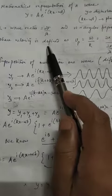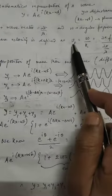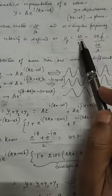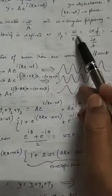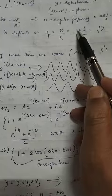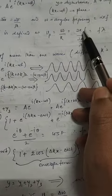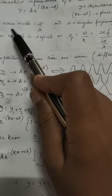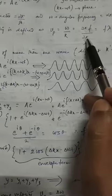The phase velocity is defined as vp equals ω/k. You can see omega can be written as 2πf, and k is the wave vector which can be written as 2π/λ.